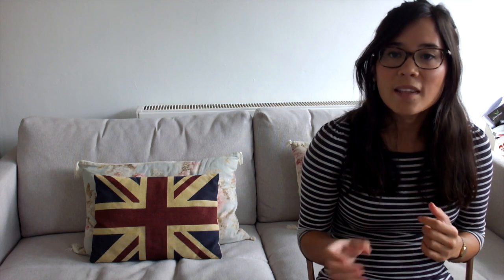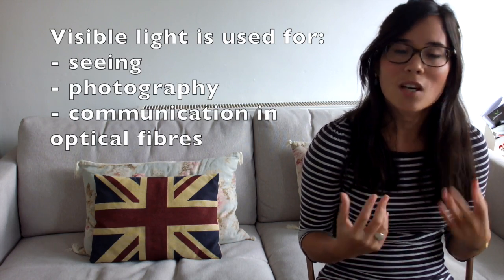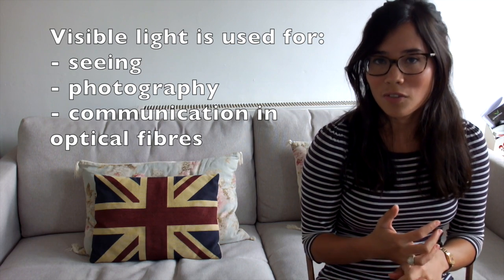Then we move up again and we're at visible light, and that's just the light that we use to see in everyday life. We use that to create images that our eyes can see, and it's also used in photography.